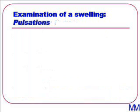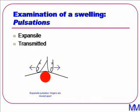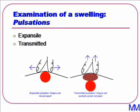Assessing pulsations is often confused, but is actually very simple. All we want to know is whether the lump is purely pulsatile or also expansile. When palpating an expansile lesion, your two fingers placed either side of it will be moved apart. Whereas if it is purely pulsatile, due to transmitted pulse, your fingers will not be moved apart at all.